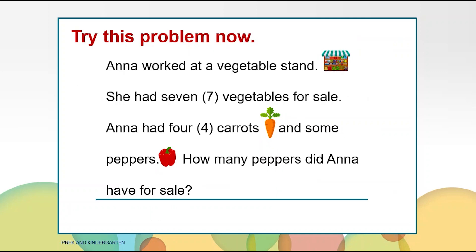Let's read the story problem again. Anna worked at a vegetable stand. She had seven vegetables for sale. Anna had four carrots and some peppers. How many peppers did Anna have for sale? I want you to work out this problem. You may use your paper, crayons, pictures, numbers, words, or even your counters to show your thinking. I'll give you time to work on this problem now.